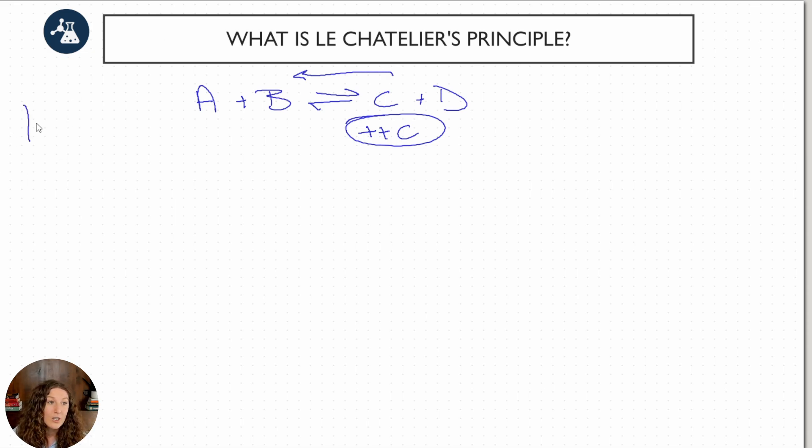Because remember, our KEQ, our products over our reactants, is a ratio. So if we drastically increase the products, in order to maintain KEQ, we're going to actually want more reactants to balance out this value. And that's exactly what happens. We'll actually see a shift, we call it a left shift, back to reactants, when we add in too much C.